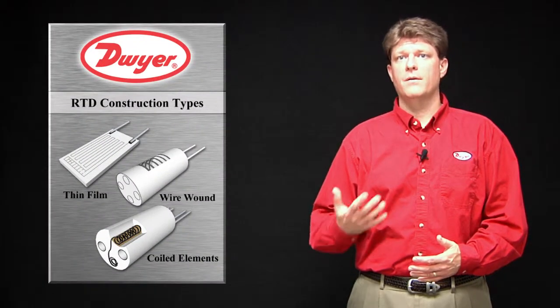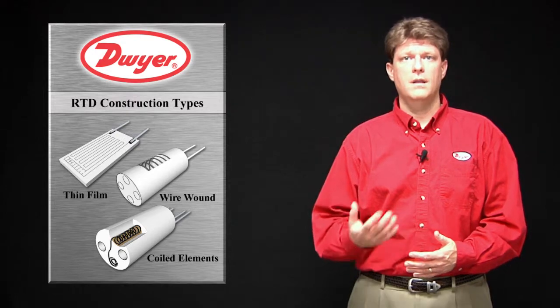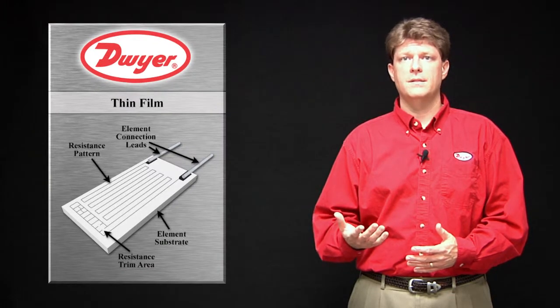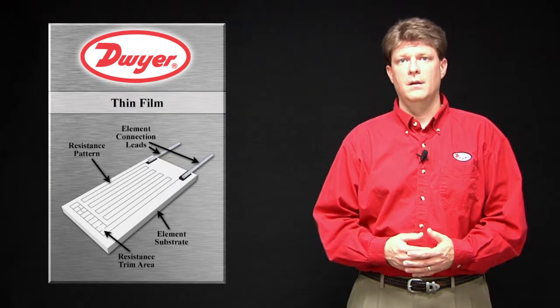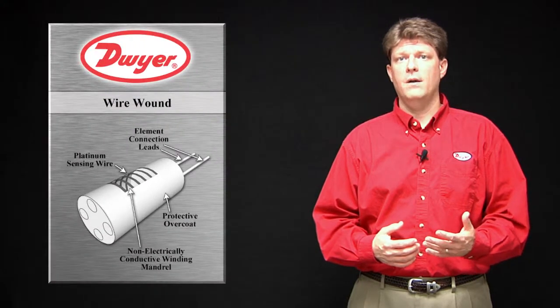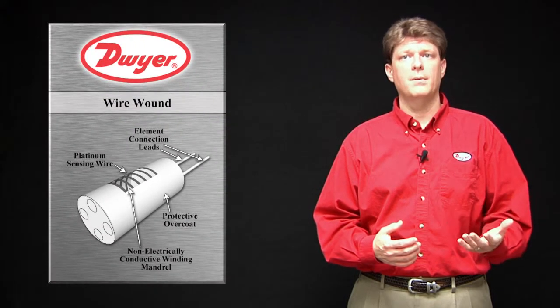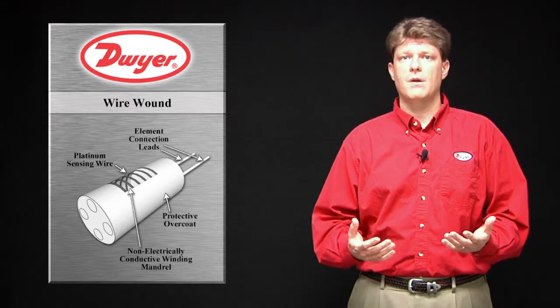There are three main types of construction of RTDs: thin film, wire round, and coiled element. In thin film, the conductor is deposited as a thin film on a ceramic substrate. In wire round, a fine wire is wound around an insulator, typically a glass or ceramic bobbin, with a seal coating of ceramic and glass.